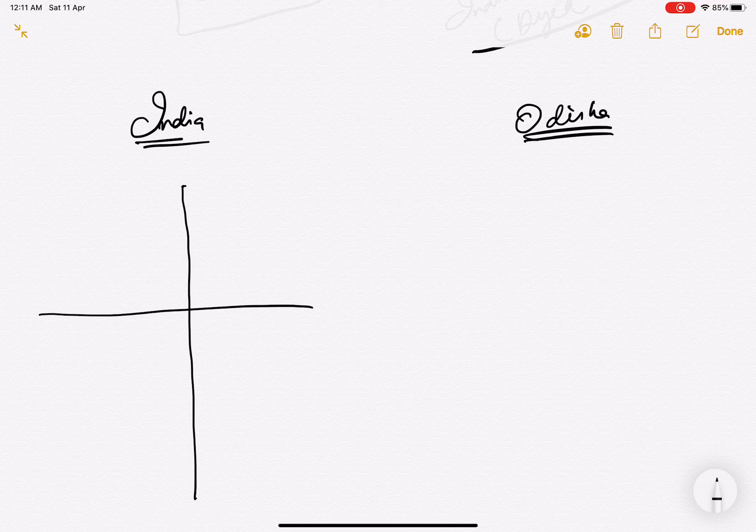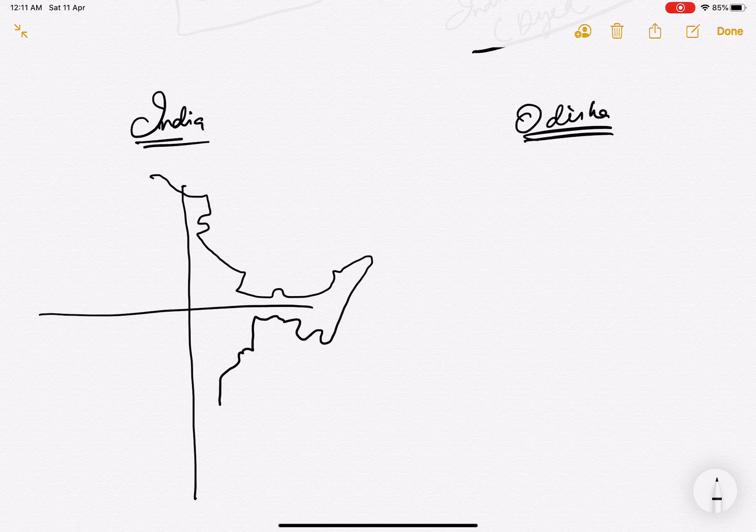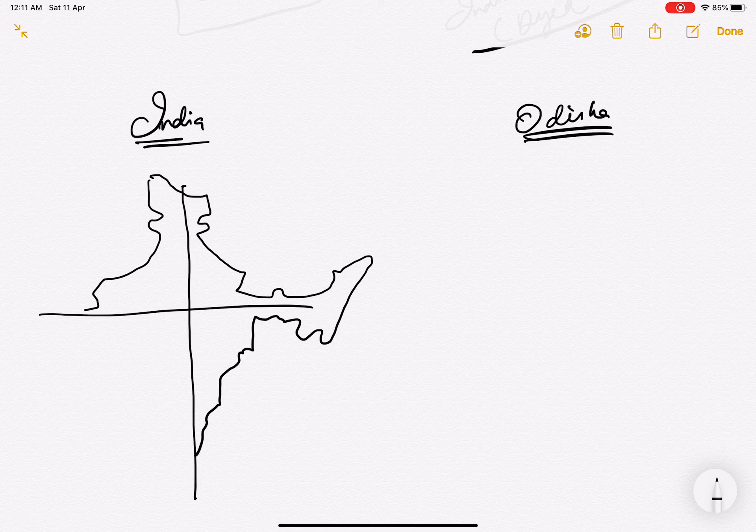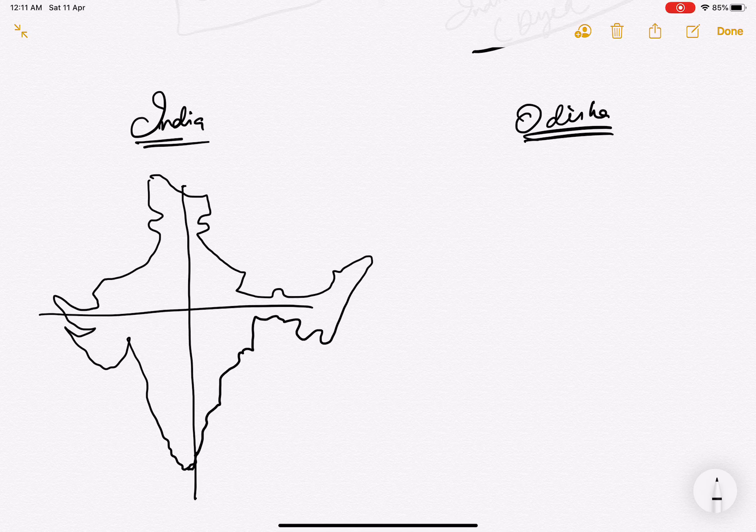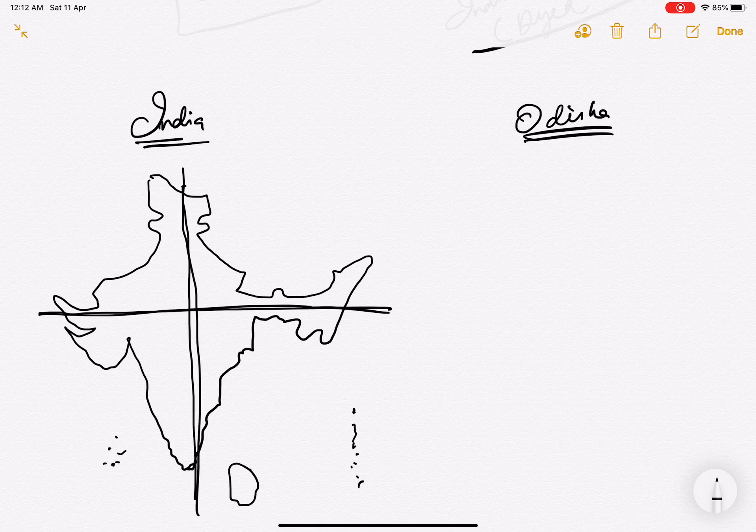This is the India map. Simply, first of all just draw two lines in the cross section and then keep joining the lines. That is simply how you draw an India map.